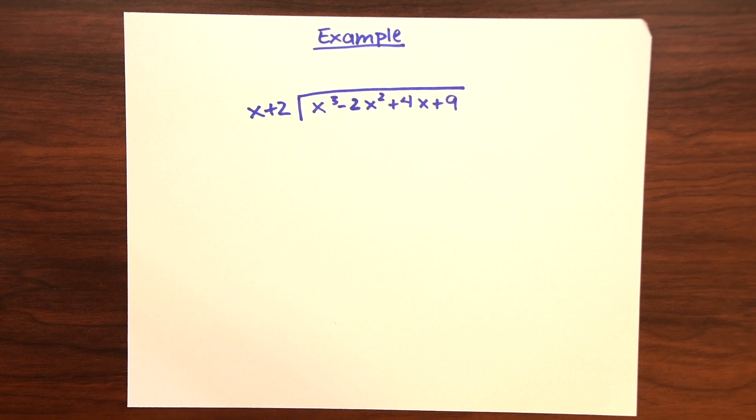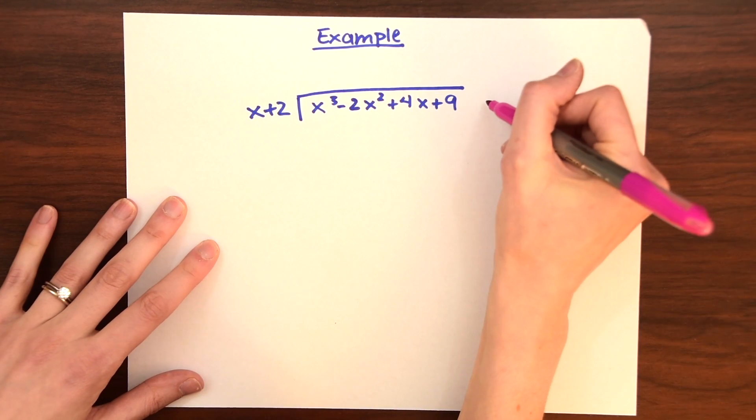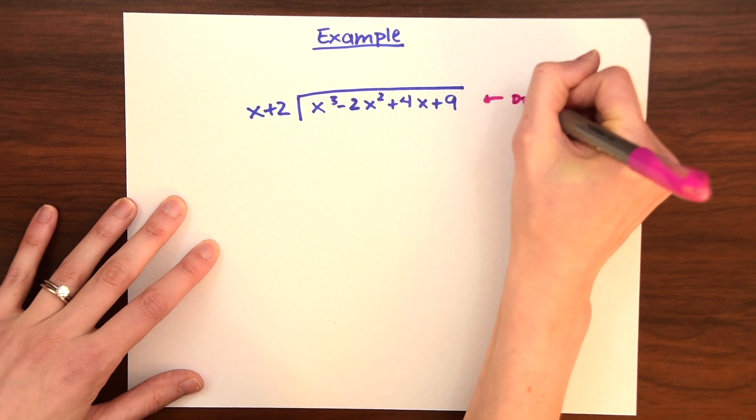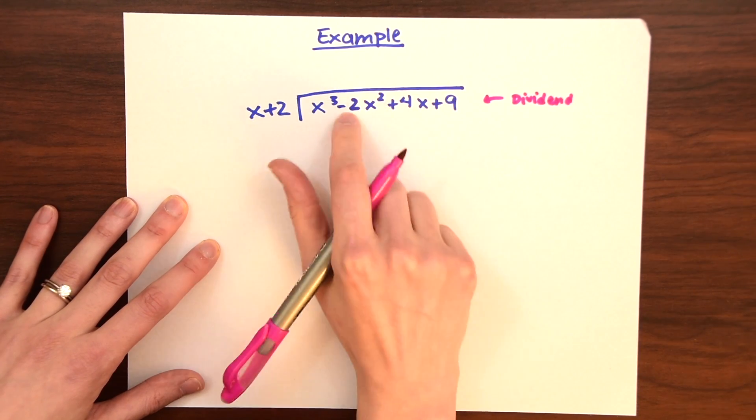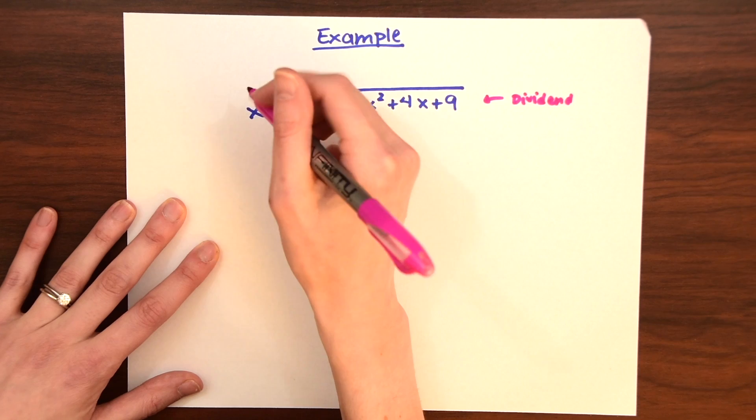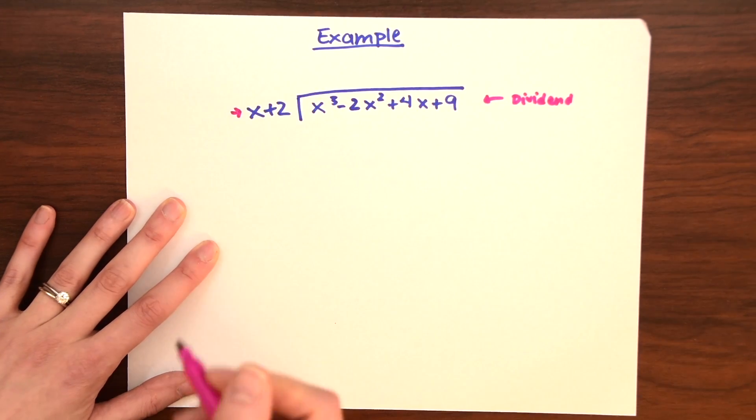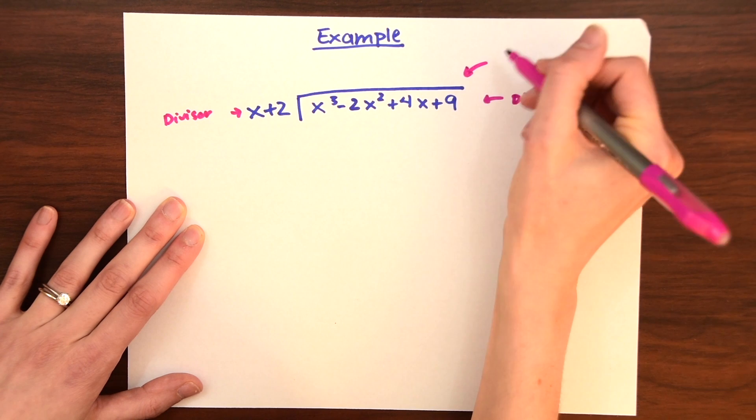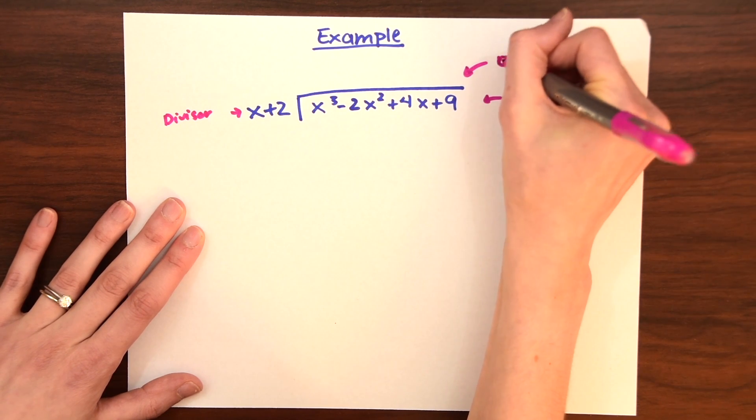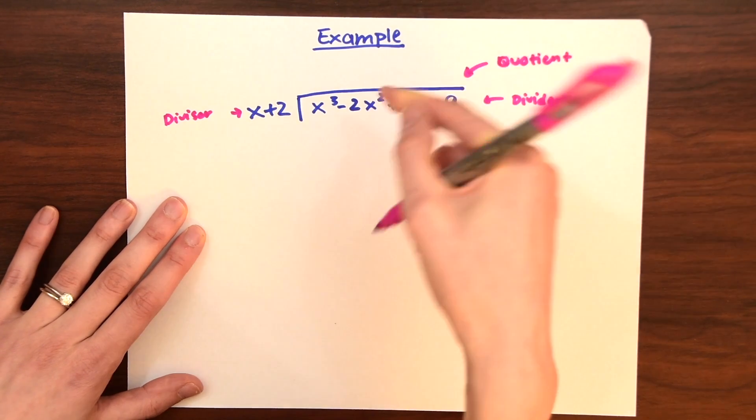So before we dive into long division, I just want to do a little reminder of what each part of this represents. We have over here, this is called the dividend. So the polynomial we're dividing is inside the dividend. And then this binomial right here is called the divisor. And then of course, what we're trying to find is the answer, the quotient, which will go up here.